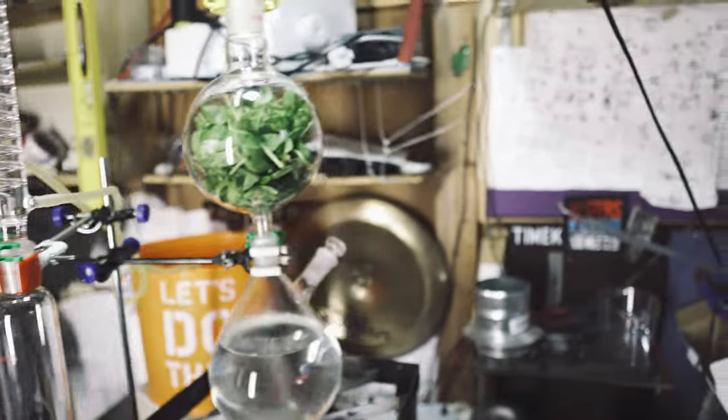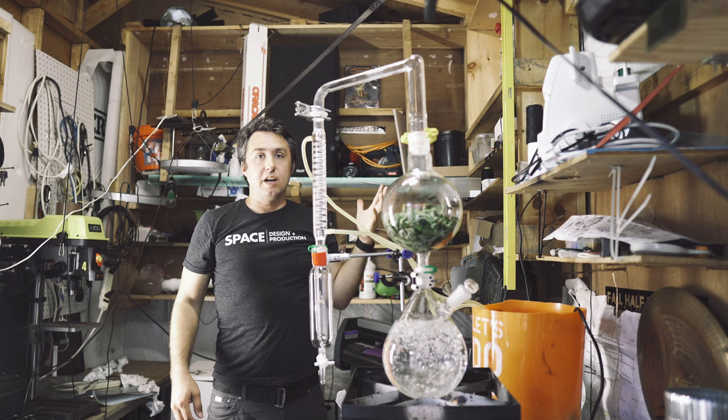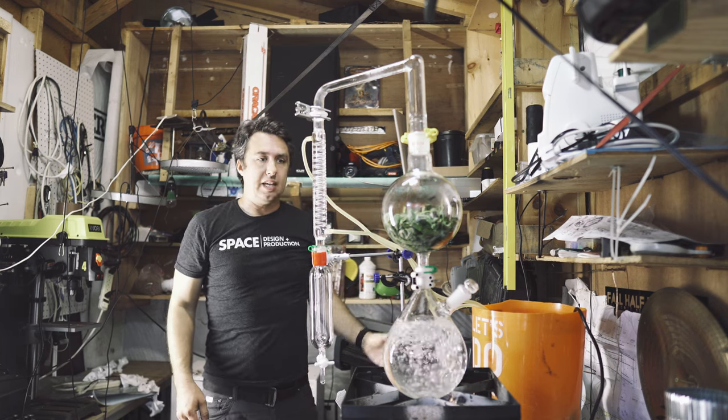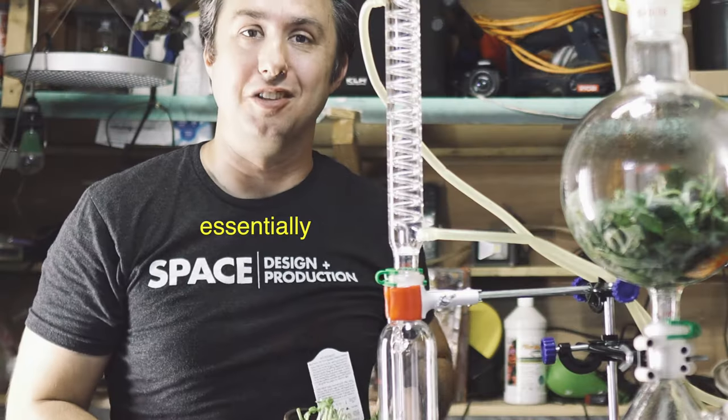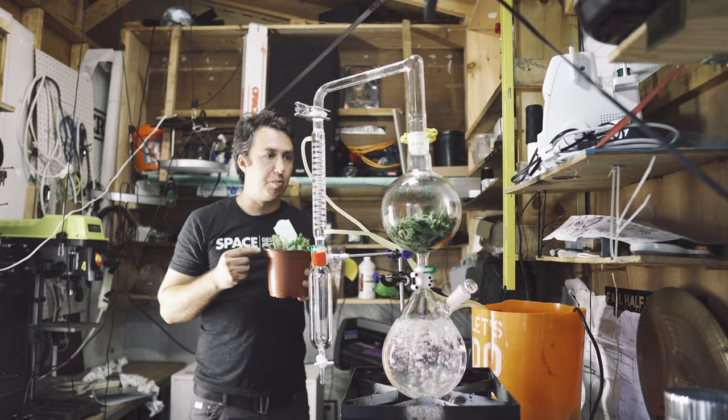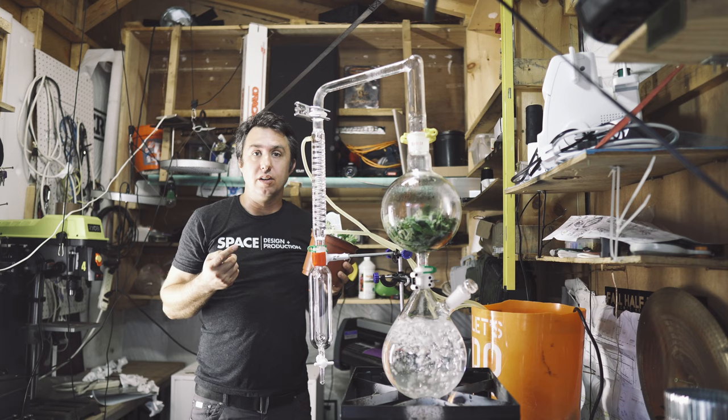What are we actually doing here? What are we making here? This is steam distillation, and we're essentially turning this little basil plant into an essential oil. We're extracting the essential oils out of it.